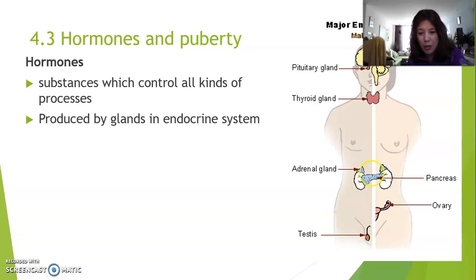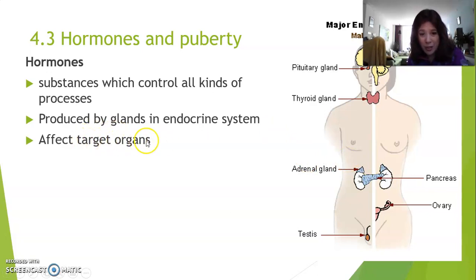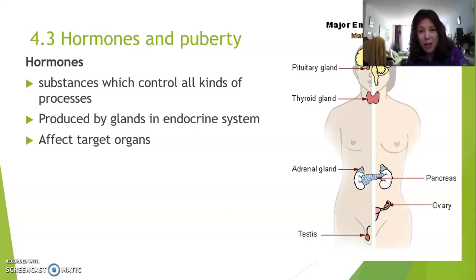Let's talk about the adrenal glands and the pancreas. The adrenal gland makes the hormone adrenaline, which is called the fight-or-flight hormone. What all endocrine glands do is produce hormones that affect target organs. The adrenal gland makes adrenaline, which gets into the bloodstream and acts like a messenger. This message goes to your heart and lungs — your heart starts beating faster, your breathing goes up — so that you can efficiently run away or fight.